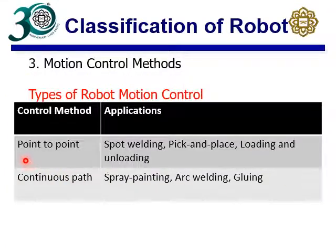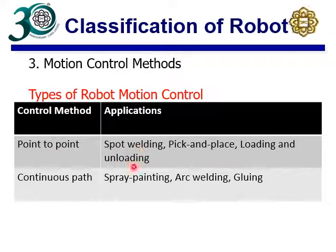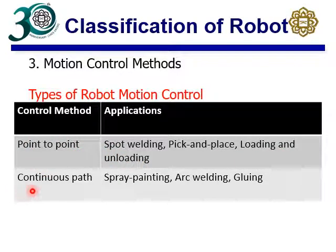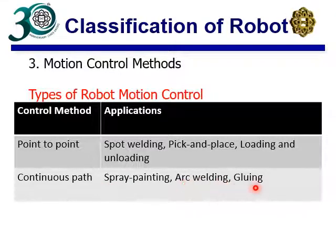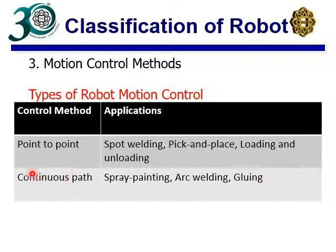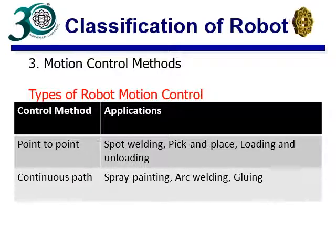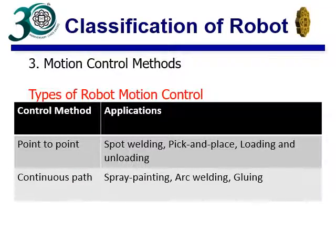Point-to-point control is applicable for pick-and-place operations, spot welding, and loading/unloading operations. For continuous path control, applications include spray painting, arc welding, and gluing — operations where you have to follow a specific path. We will discuss both continuous path and point-to-point control in this course.